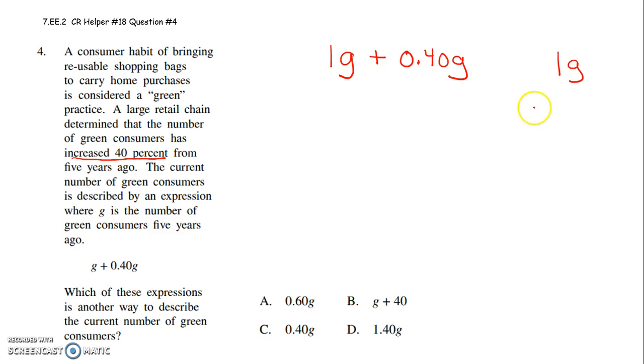So I have to do 1G plus 0.40G. So in order to add those, I have to line up decimal points. So after that 1, I'm going to put 1.00. So 1.00 plus 0.40. 0 plus 0 is 0. 0 plus 4 is 4. Drag down that decimal point and then we have a 1. 1 plus 0 is 1. So 1G plus 0.40G is 1.40G.